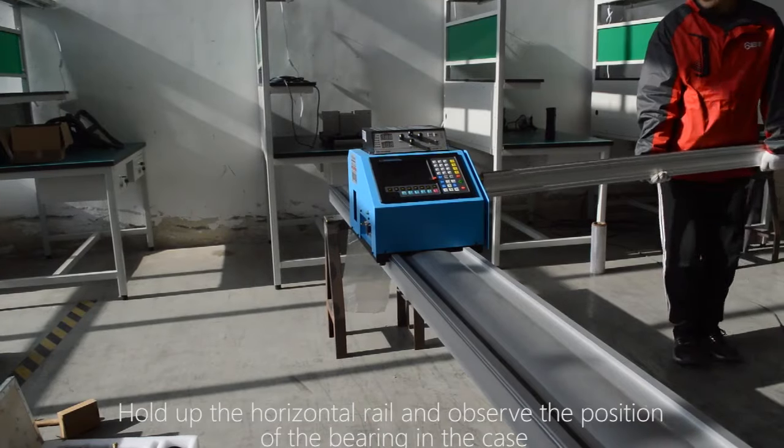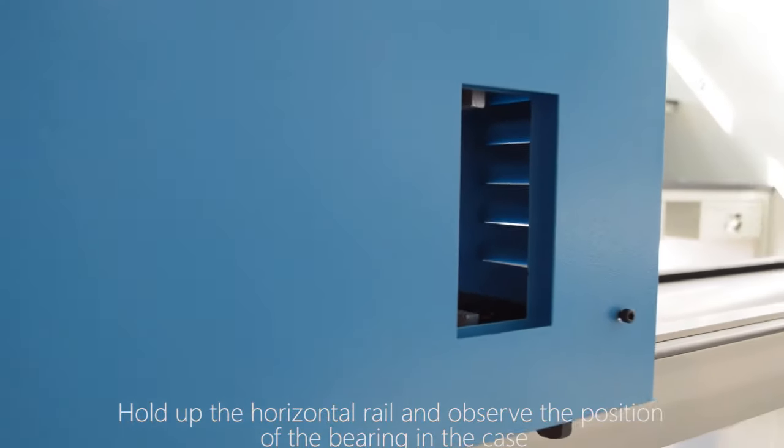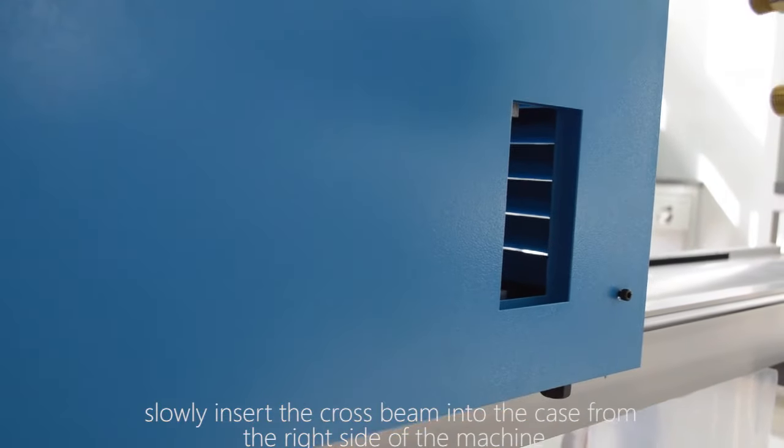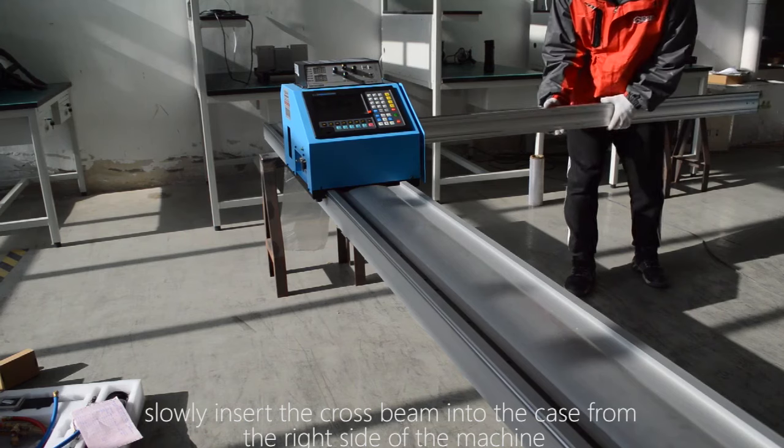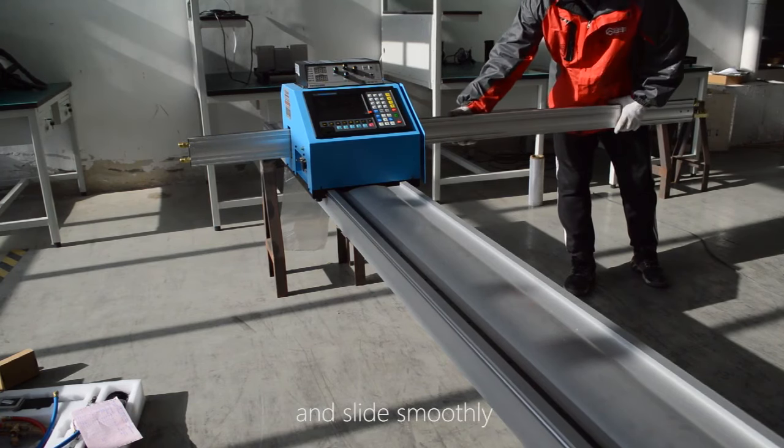Hold up the horizontal rail and observe the position of the bearing in the case. Slowly insert the cross beam into the case from the right side of the machine and slide smoothly.